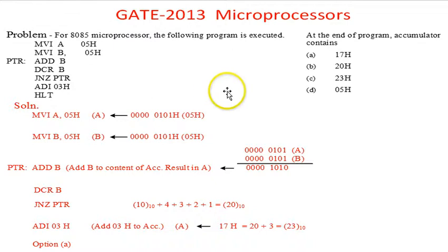We have to find out what is the content of the accumulator after the end of the program. We start with the first instruction: MVI A, 05H means move immediate 05H data to the accumulator. MVI B, 05H means move immediate 05H data to register B.